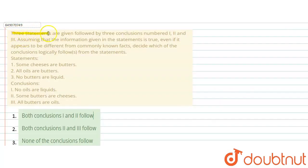The question says: Three statements are given, followed by three conclusions numbered 1, 2, and 3. Assuming the information given in the statements is true, even if they appear different from commonly known facts, decide which conclusions logically follow. Statements: Some cheese are butters, all oils are butters, no butters are liquid. Conclusions: No oils are liquid, some butters are cheese, all butters are oil.